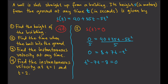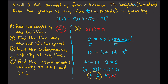We can factor this as t minus 8 times t plus 1 equals zero. So t equals 8 or t equals negative 1. Since we can't have a negative time, t equals 8 is our answer. The ball hits the ground after 8 seconds.